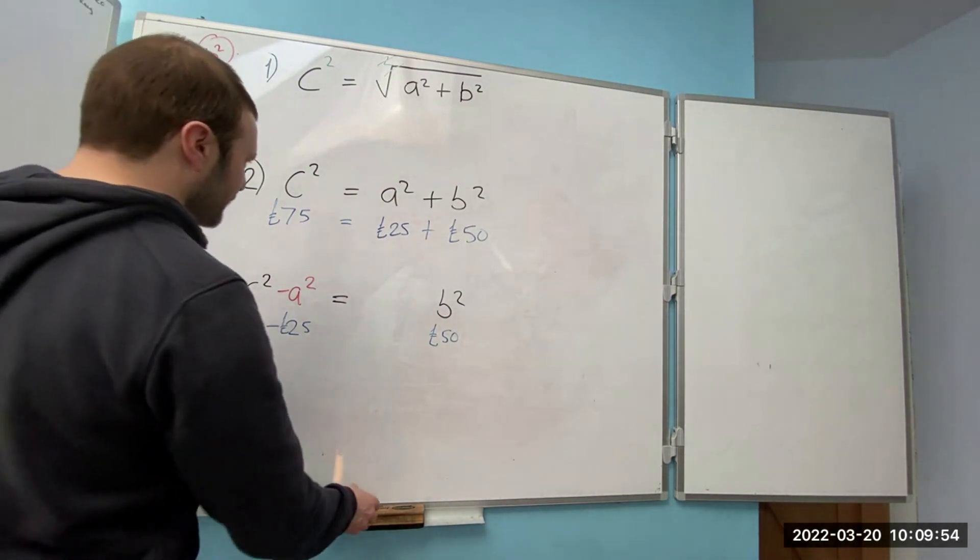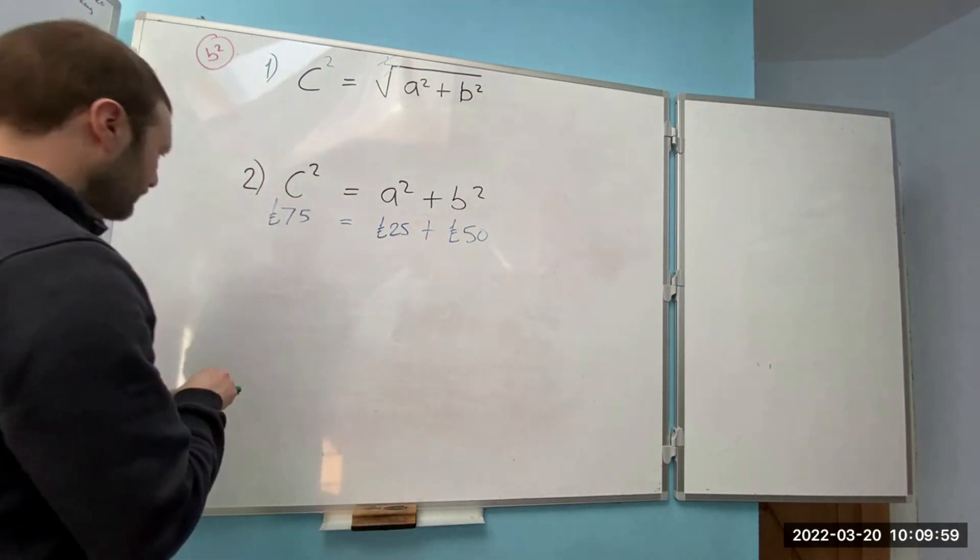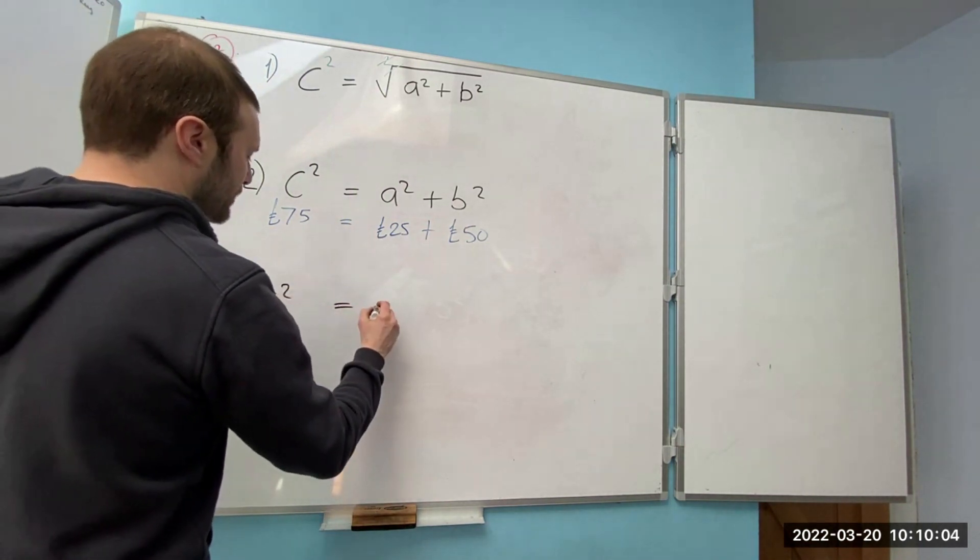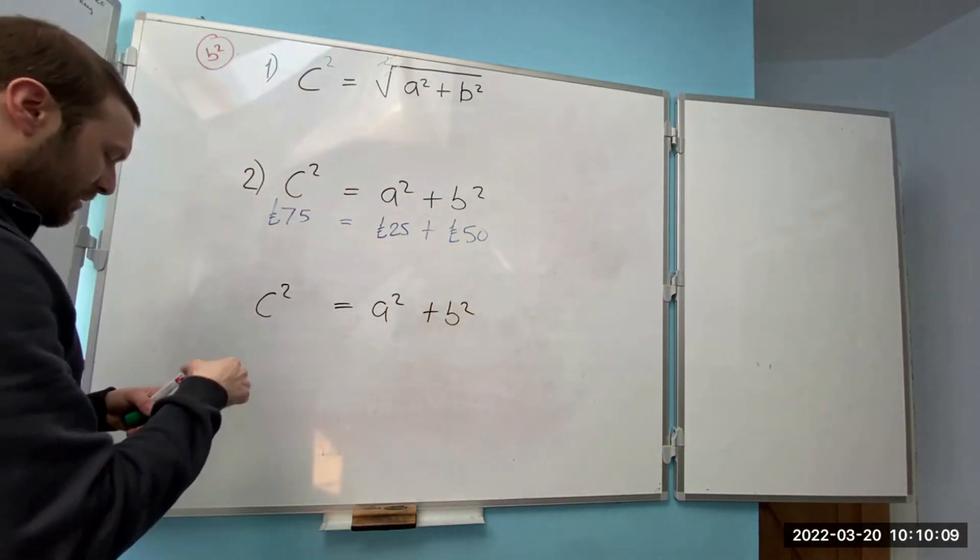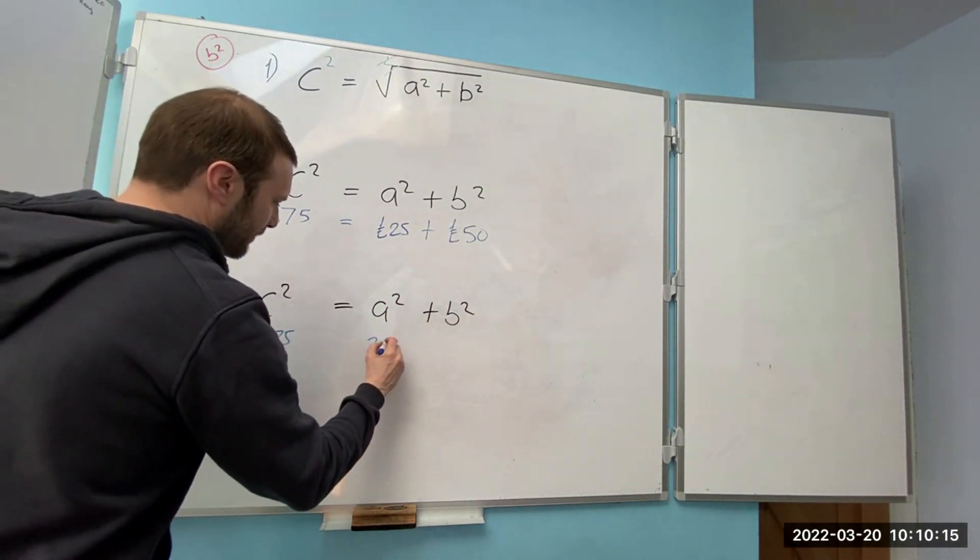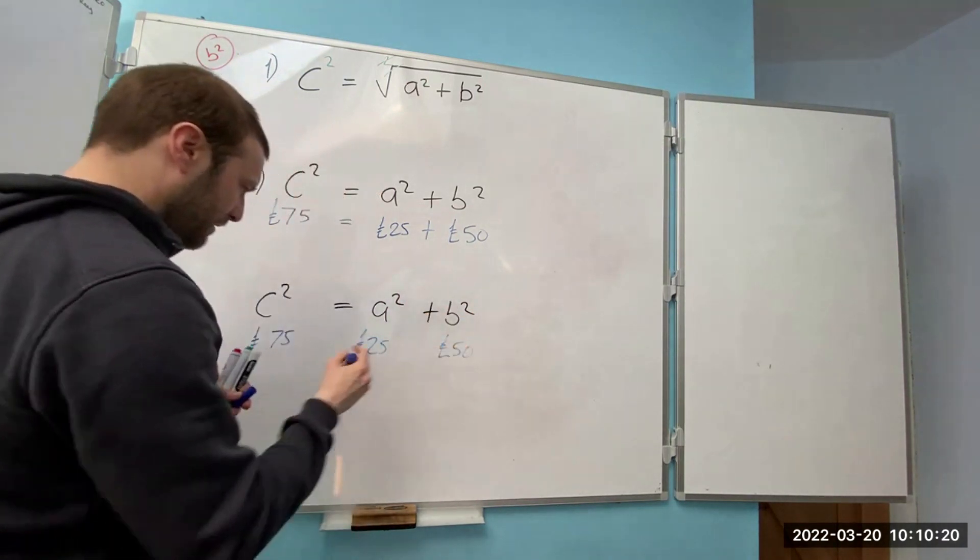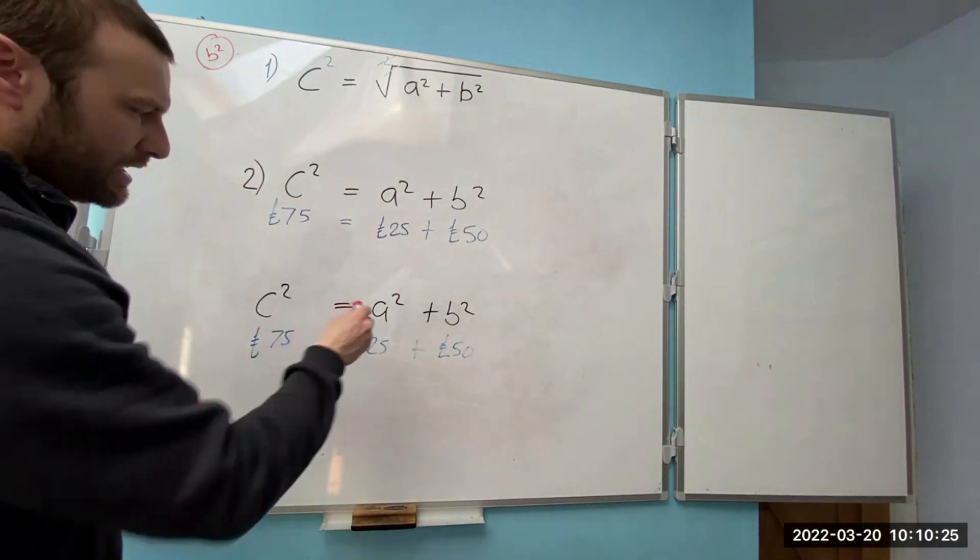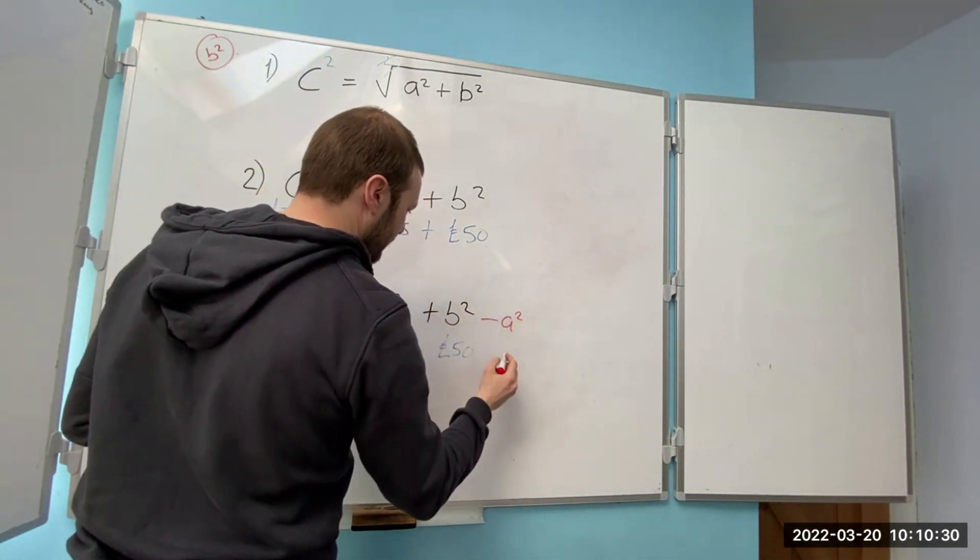If I had put the a on the other side so let me show you what would happen then. So we've got c squared equals a squared plus b squared. Put the values in so we've got 75 pounds, we've got 25 pounds and we've got 50 pounds.